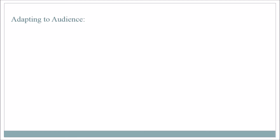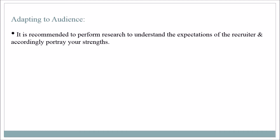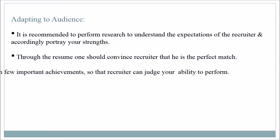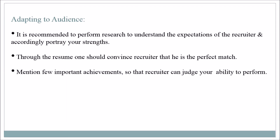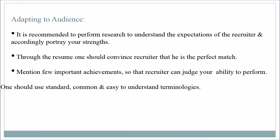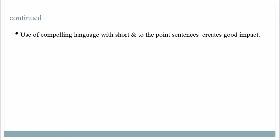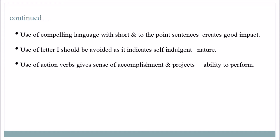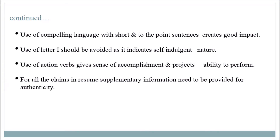Adapting to audience: It is recommended to perform research to understand the expectations of the recruiter and accordingly portray your strengths. Through the resume, one should convince the recruiter that they are the perfect match. Mention a few important achievements so the recruiter can judge your ability to perform. Use standard, common, and easy-to-understand terminologies. Use compelling language with short and to-the-point sentences. Avoid use of the letter 'I' as it indicates a self-indulgent nature. Use of action verbs gives a sense of accomplishment and projects ability to perform. For all claims in the resume, supplementary information should be provided for authenticity.